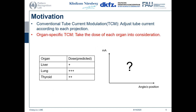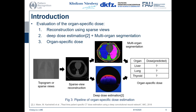One idea to further improve conventional TCM is to take the dose of each organ into consideration, which I call organ-specific TCM, and which is also what my PhD topic will be about. Our plan is that before CT scanning, we reconstruct the CT volume from sparse view projections, or even from a topogram.